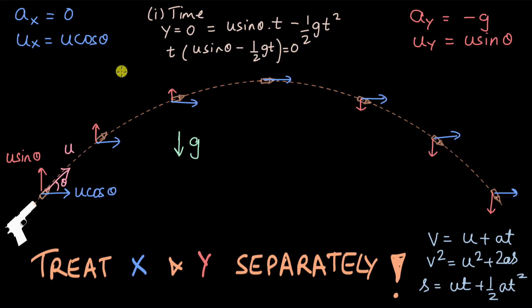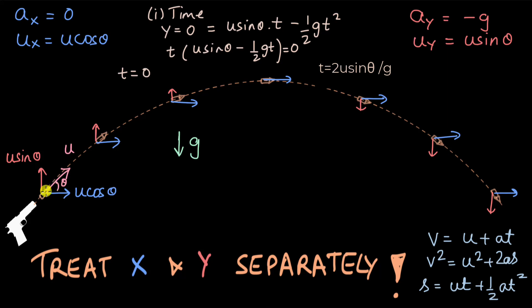Two solutions come from this equation. One is t equals zero, which tells us the position of the bullet when it was just fired. The other is t equals 2u sin theta divided by g, which tells us the time when the bullet completes its journey and returns to the same height.